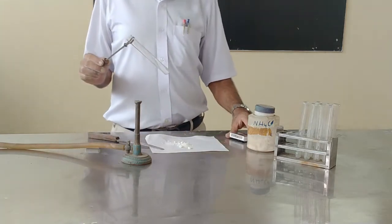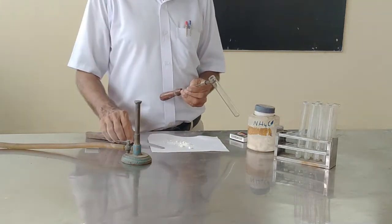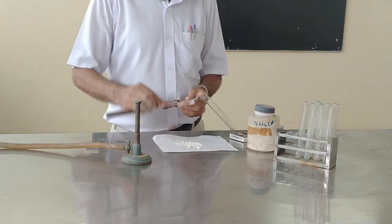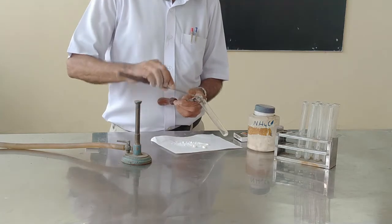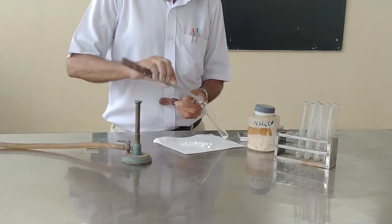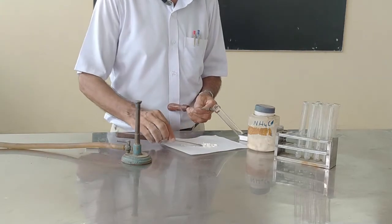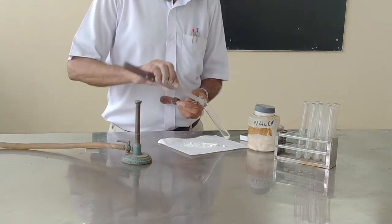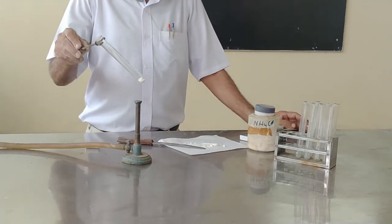Spatula and matchbox. In this process, first we have taken ammonium chloride in the test tube, which is solid in form. Now heat this ammonium chloride in the test tube on the burner directly.